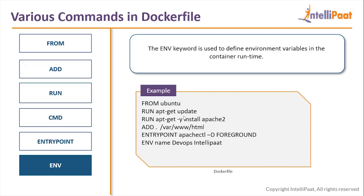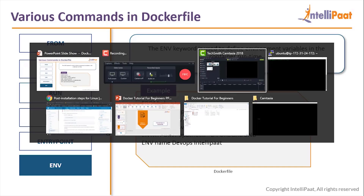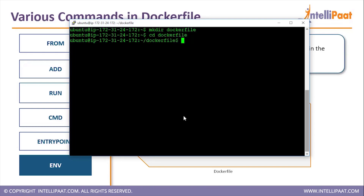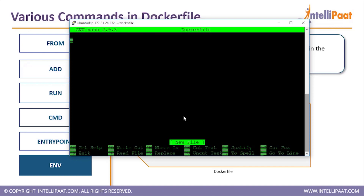Now let's create this Dockerfile on our system. I'll go to my PuTTY software and use nano to create a Dockerfile. First, let me create a directory called 'dockerfile' using 'mkdir dockerfile', then go inside it with 'cd dockerfile'. When creating a Dockerfile, the name of the file always has to be 'Dockerfile' itself. So I'll type 'nano Dockerfile' to open it.